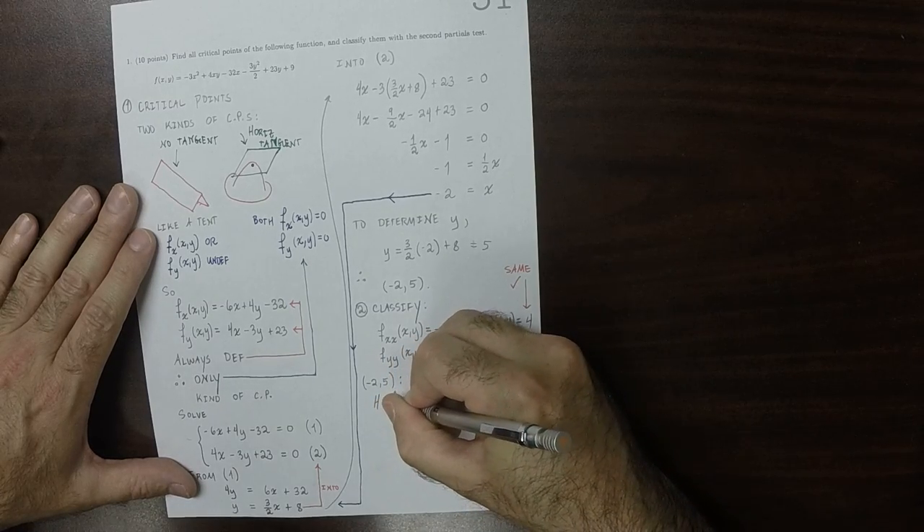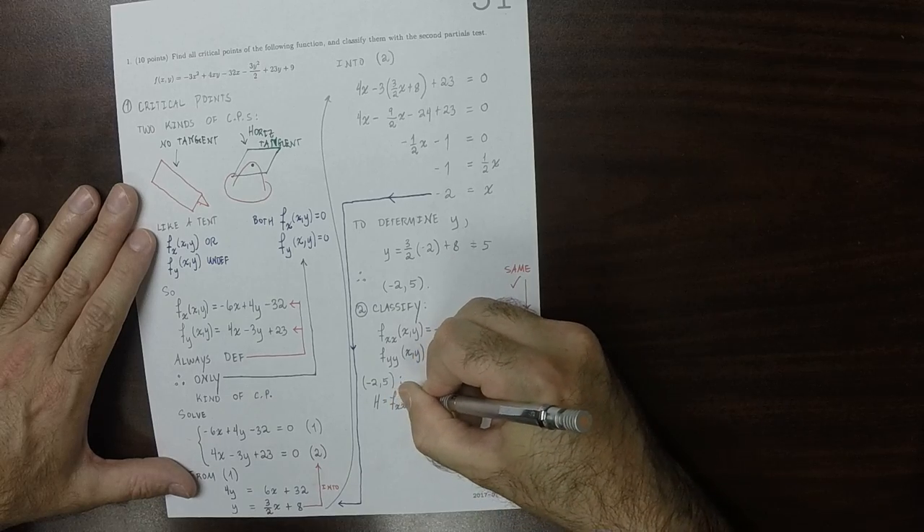And just as a reminder, the fact that these are same is good. If we had determined that these were different, then that would indicate that we had made an error somewhere. So the point negative 2, 5, the classifier h, well, that's the product of the pure partials at the point in question minus the product of the mixed partials, but because the mixed partials are the same, we can just square either one of them.